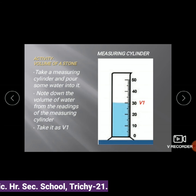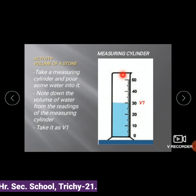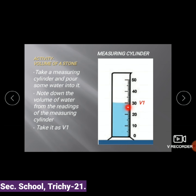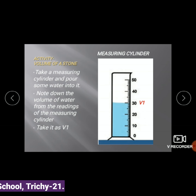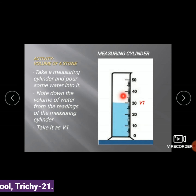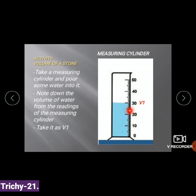Do not fill the cylinder completely — the maximum capacity of this container is 50, so we take water up to 30 or 40. Note down the volume of water from the readings of the measuring cylinder. Here the volume of water is 30 ml, and we take it as V1.